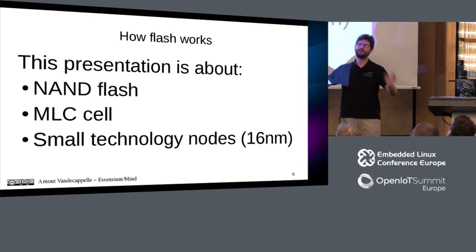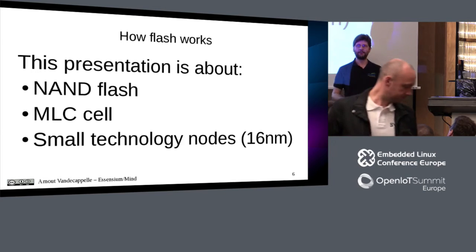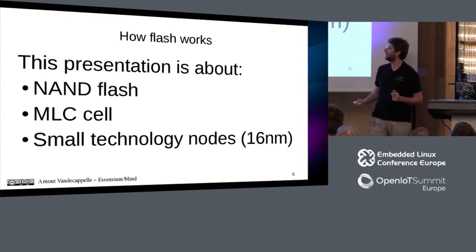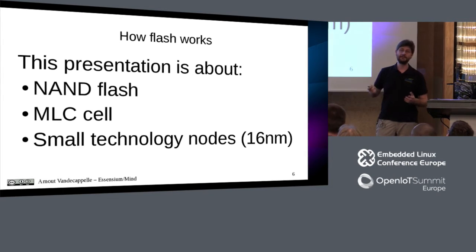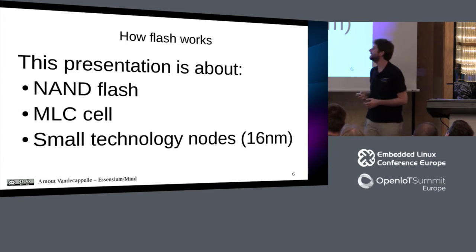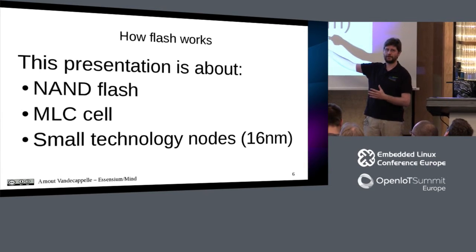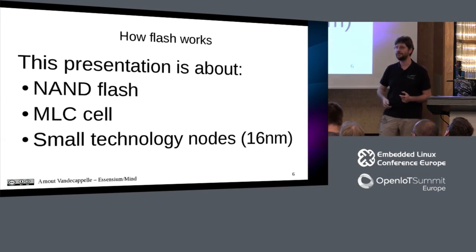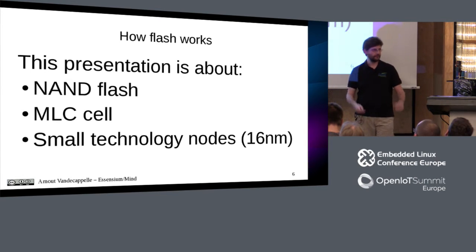This presentation is not about Flash technology in general, and I'm not going to go over its history. Instead, it's about current technology — which means NAND flash, because that's almost the only thing used nowadays in embedded systems because it's so much cheaper. It's about both SLC and MLC, but I will talk a lot about MLC — multi-level cell. I will explain what it is later. It's also about what happens in the small technology nodes — not the technology of 10 years ago, but the things you currently buy.